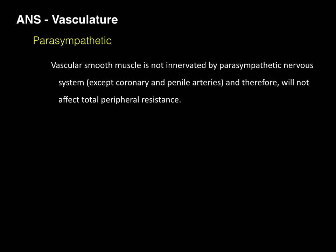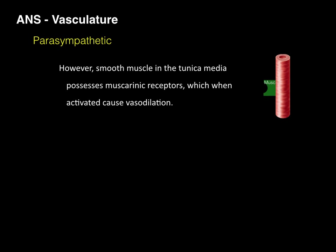Now we also have a parasympathetic response. Vascular smooth muscle is not innervated by the parasympathetic nervous system — with exceptions of coronary and penile arteries — and therefore parasympathetics will not affect total peripheral resistance. However, smooth muscle in the tunica media possesses muscarinic receptors, which when activated can cause vasodilation. So even though parasympathetic nerves don't go specifically to these vessels, if there's a medication in the blood that is a cholinergic agonist, it could bind and act on those muscarinic receptors.